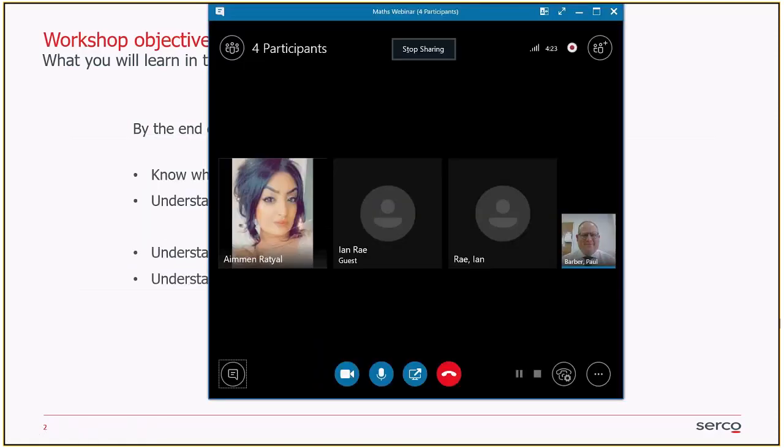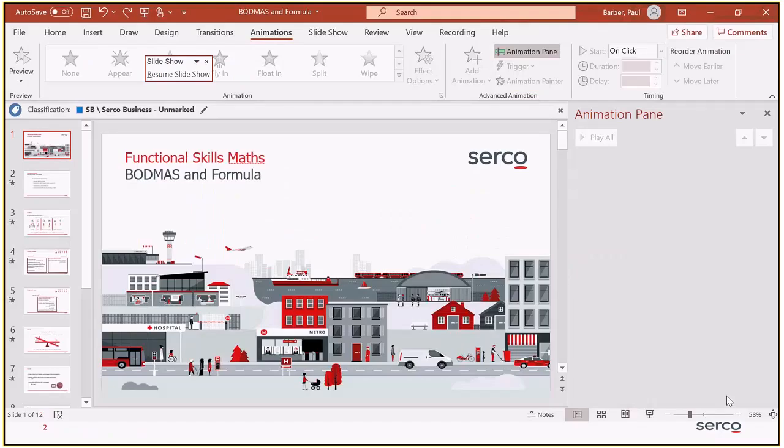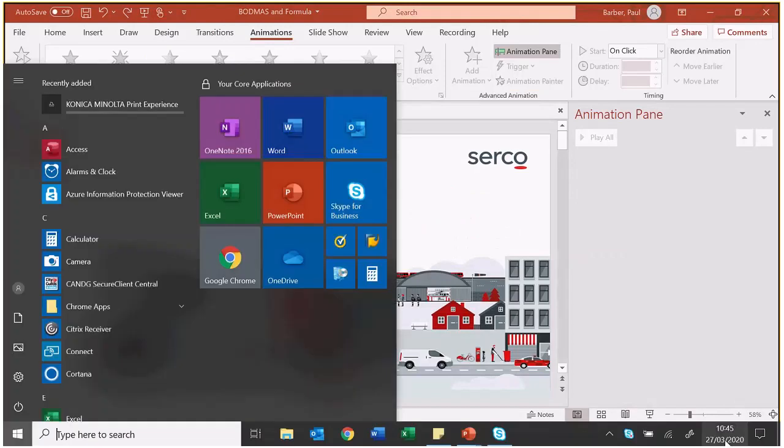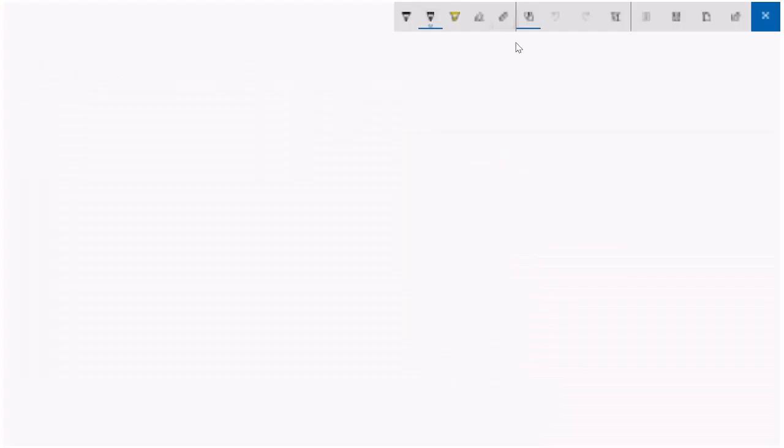Before I do that, I am going to draw on the screen. So if I gave you the question of 2 add 3 times 4, what would you say the answer to that is? 24. No. I'll explain why shortly.